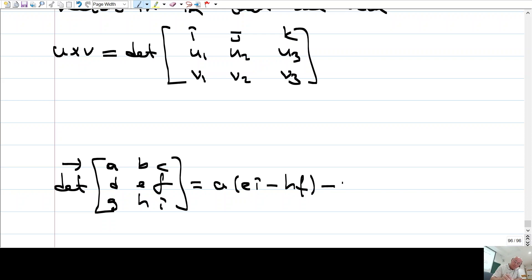Ondan sonra işareti eksi yapıyorsunuz, b koyuyorsunuz, bunu alıyorsunuz, sonra yine aynı şey, bunu ve bunu kapatıyorsunuz, geriye kalanın determinantına bakıyorsunuz. D var, F var, G var, H var. Determinant D times I minus G times F.